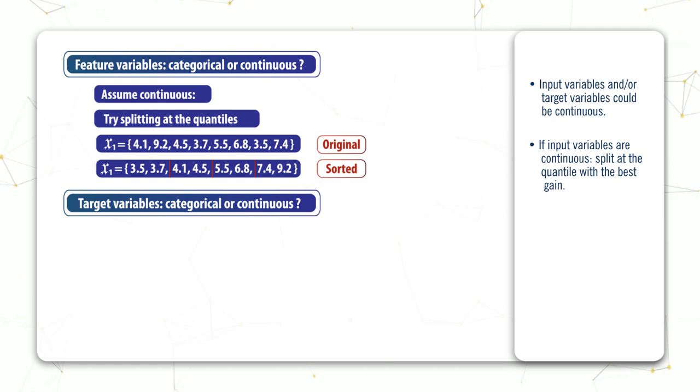This raises a question: how many quantiles should we be trying? Well, that's more of an implementation issue—different algorithms do it in different ways. A common one is to do four quantiles, but some algorithms do 10 quantiles, and some even try every single value. Obviously, attempting more quantiles means the algorithm needs more computational resources during training, but in return it usually offers better granularity and hence better performance.